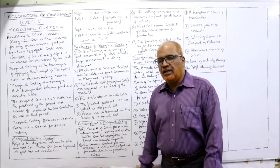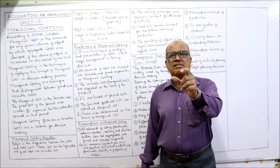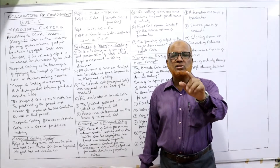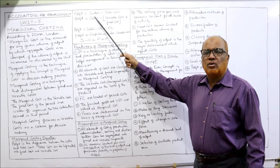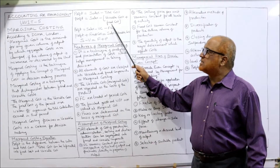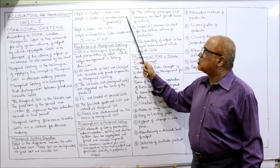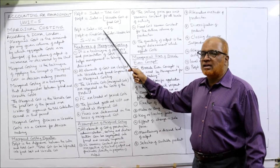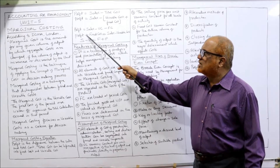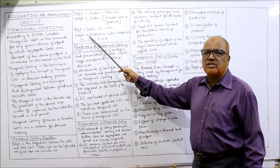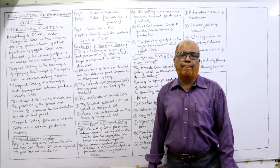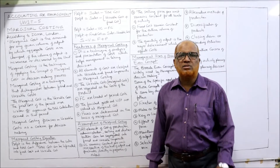The marginal costing equation: Profit equals Sales minus Total Cost. We bifurcate total cost into fixed cost and variable cost, so: Profit = Sales − (Variable Cost + Fixed Cost), which gives Profit = Sales − Variable Cost − Fixed Cost. Rearranging, we get the marginal costing equation: S − V = F + P, meaning Sales minus Variable Cost equals Fixed Cost plus Profit.